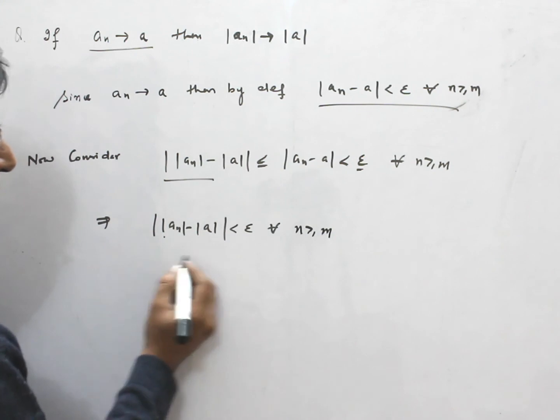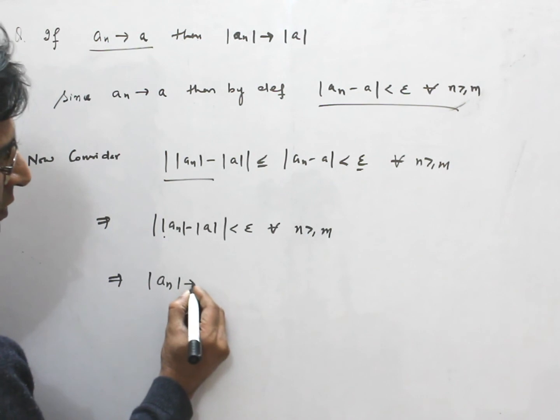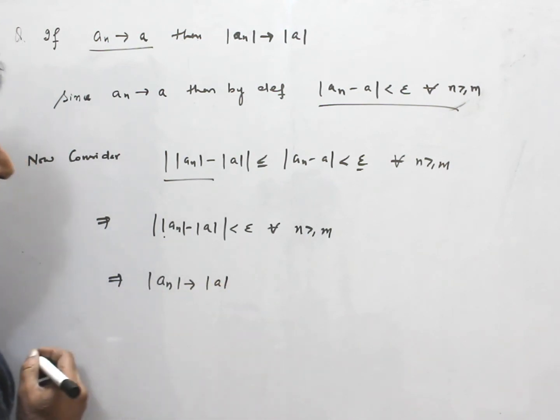And this means, mod of a n converts to mod of a. So, this is the result.